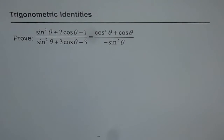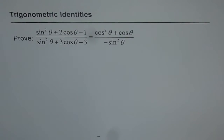Trigonometric identities. Prove that sin²θ + 2cosθ − 1 divided by sin²θ + 3cosθ − 3 is equal to cos²θ + cosθ divided by −sin²θ.